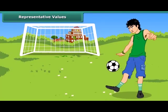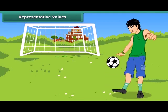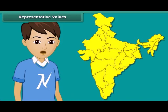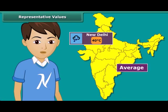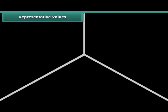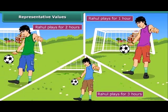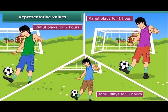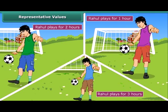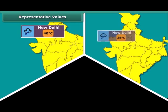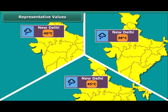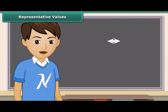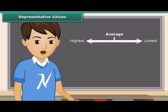Rahul spends on an average of about 2 hours daily for his outdoor games. The average temperature of New Delhi at this time of the year is about 40 degrees Celsius. Have you noticed the word average? By average, we understand that Rahul usually plays for 2 hours. On some days he may play for fewer hours and on other days he may play longer. Similarly, the average temperature of 40 degrees Celsius means the temperature of New Delhi is around 40 degrees Celsius — sometimes less, sometimes more. Thus, we realize that average lies between the highest and the lowest value of the given data.